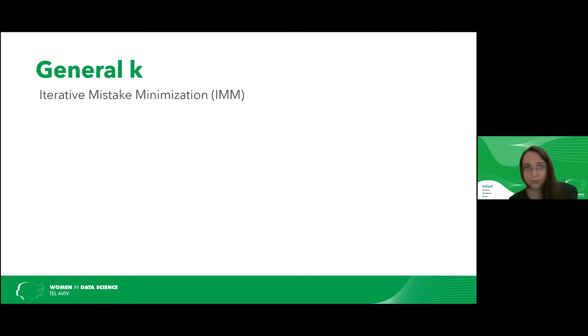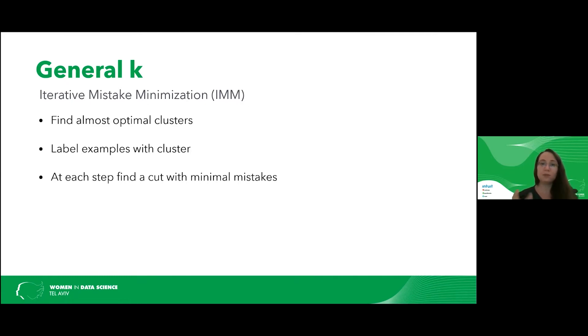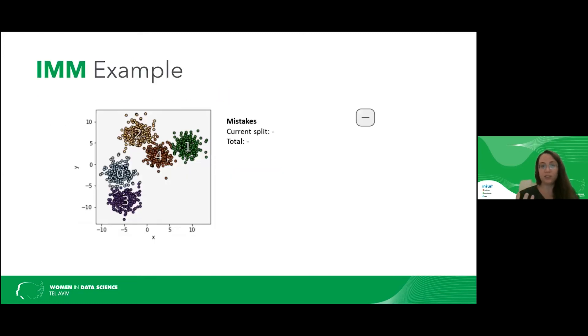And what about the general case? So for general case, we design a new algorithm, the iterative mistake minimization algorithm, IMM. And in this algorithm, we first run some unexplainable clustering algorithm. Then we label each example with its cluster. And then what we do is at each step, we find the cut with minimal number of mistakes. Mistakes is a new notion that we define in the paper, where it means that for each node, we say that the point x is a mistake for this node if x and its center reach this node and then they part ways.